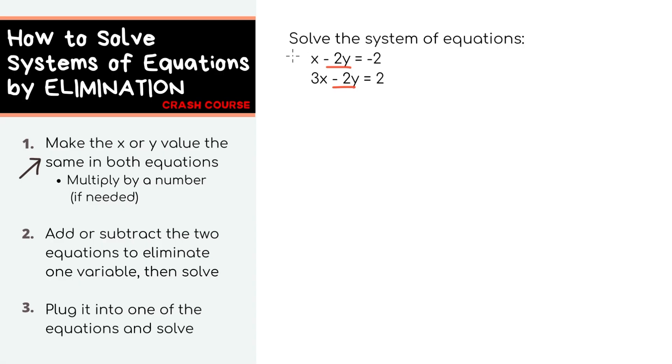For some reason, if we chose x to eliminate, we have to multiply both sides of the first equation by 3 so that both equations have 3x.